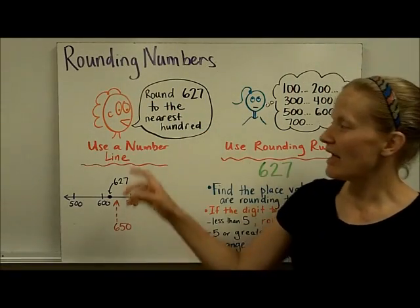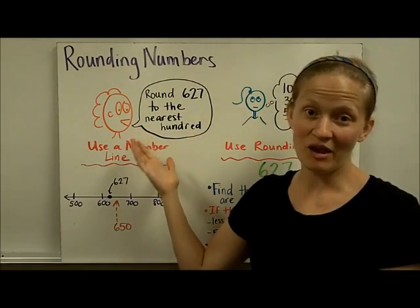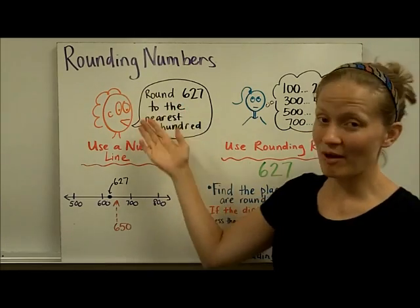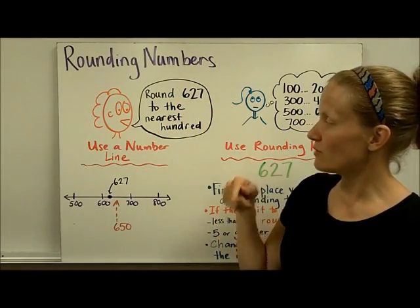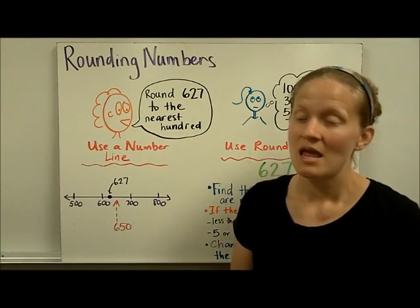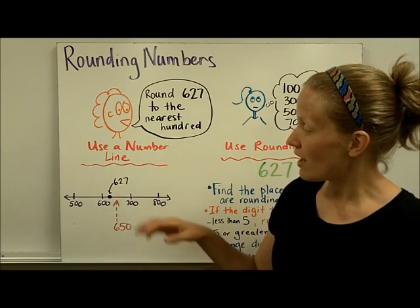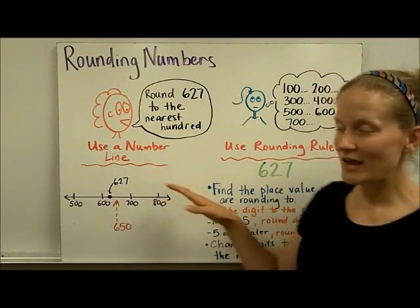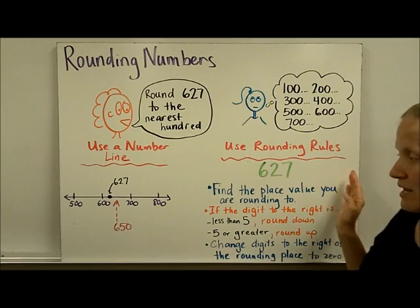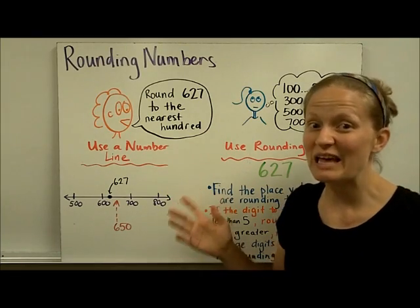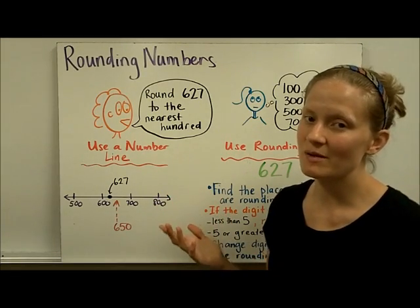Rounding numbers. I know that in second or third grade you were asked to do a problem like this: round 627 to the nearest hundred. You may have used a number line or some rounding rules, but what I want you to understand is what that actually means when you're asked to round a number.